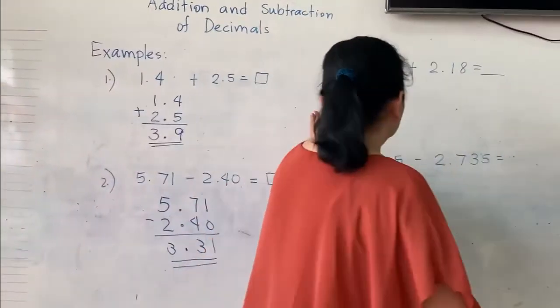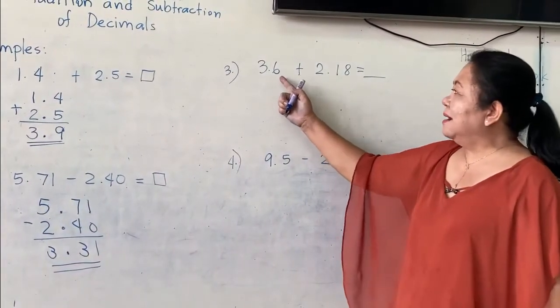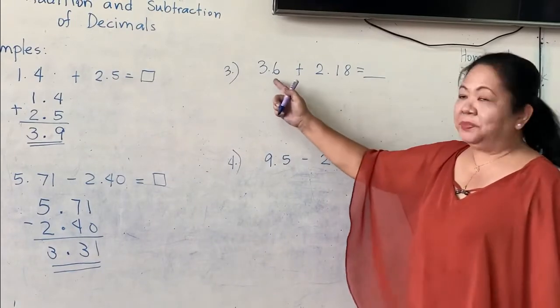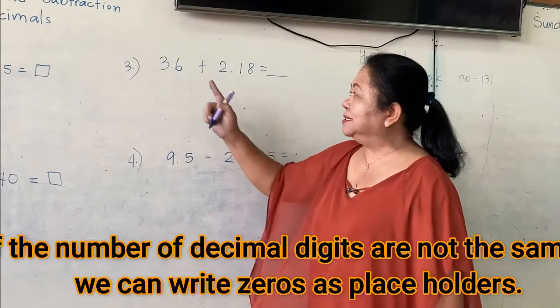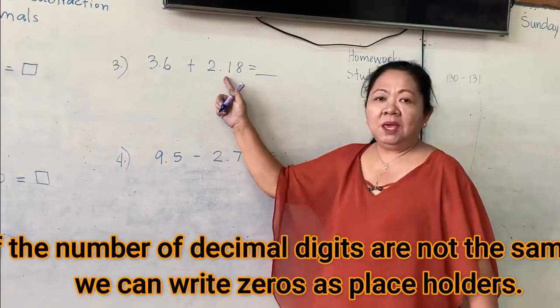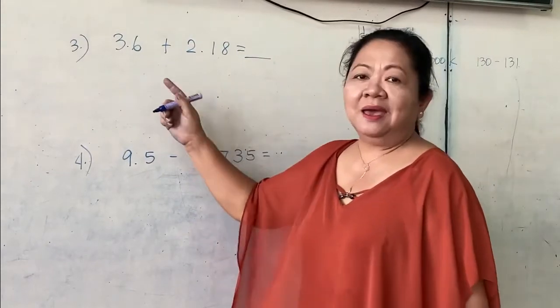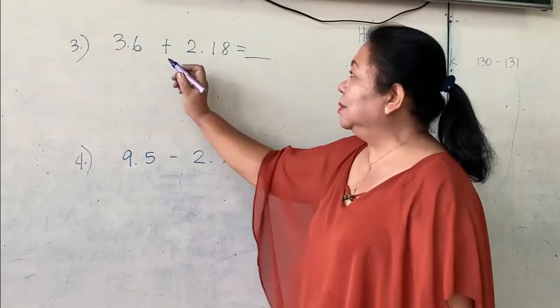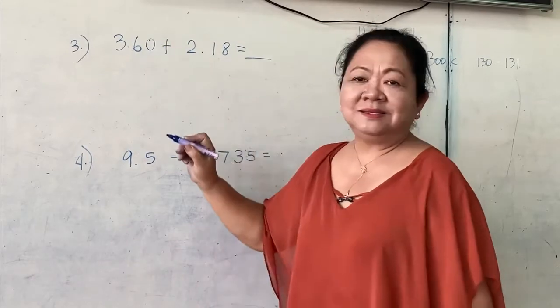Now, here is an example wherein you will notice that there are different numbers of decimal digits. Here, we have only one after the decimal point. But here, we have two after the decimal point. Therefore, in this case, you are allowed to write 0 to make the decimal digits the same.